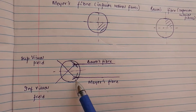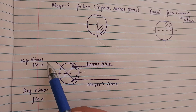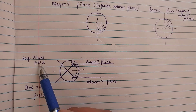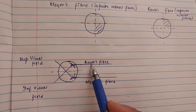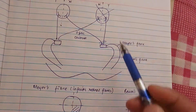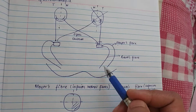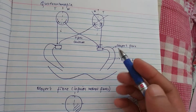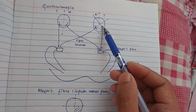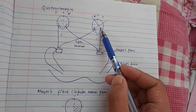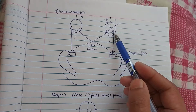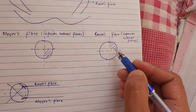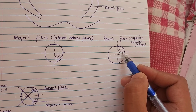Baum's fiber comprises the superior retinal fibers — specifically, the superior temporal retinal fibers and the superior nasal retinal fibers. These superior temporal and superior nasal retinal fibers belong to this quadrant of the retinal fibers carried by Baum's fiber.